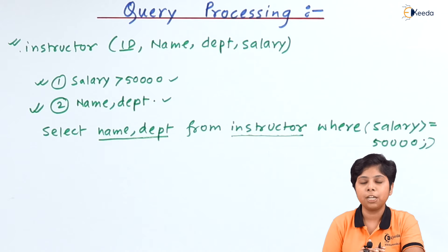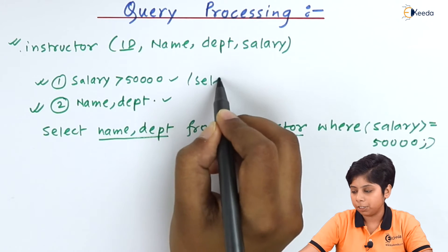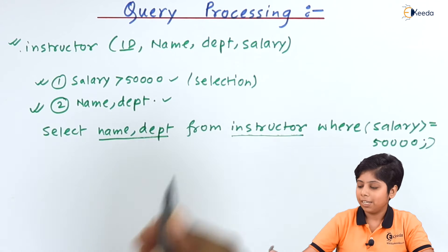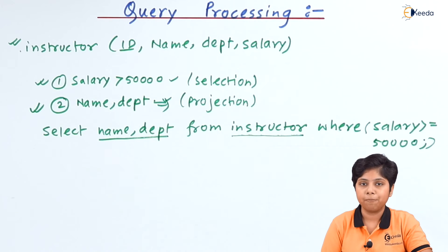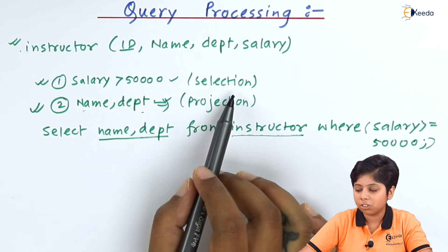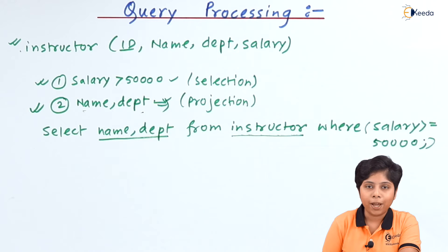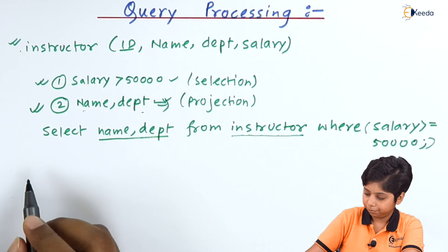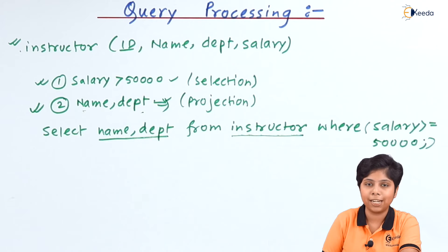We need to build queries on an operation basis. The first is a selection operation — selecting rows satisfying a particular condition from the database. The next is the projection operation — projecting specific attributes over the selected data. Now, query processing steps involve: first, the query is fed to the parser and the translator.